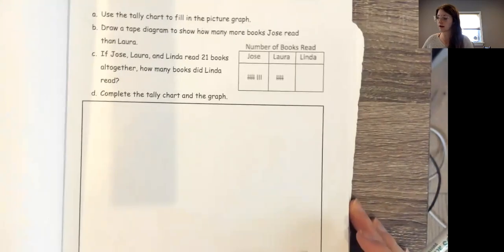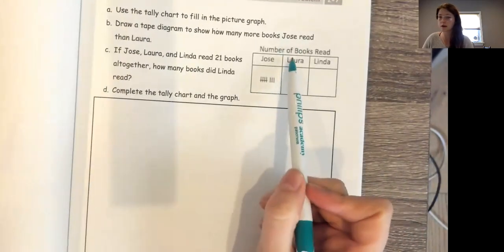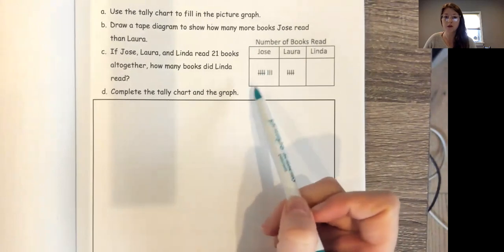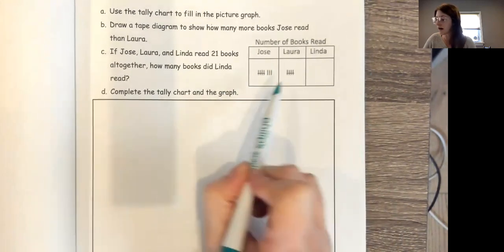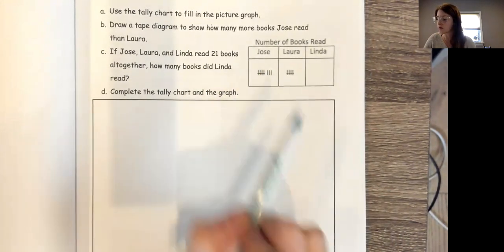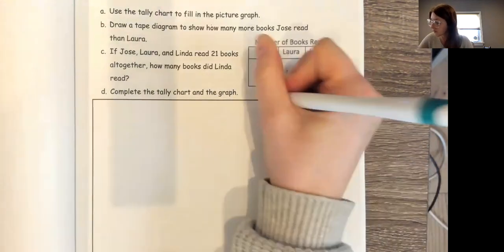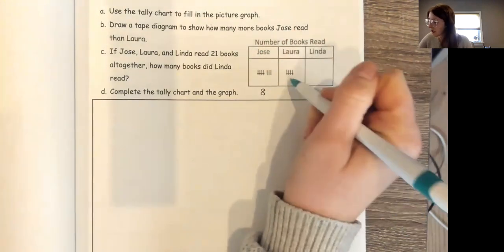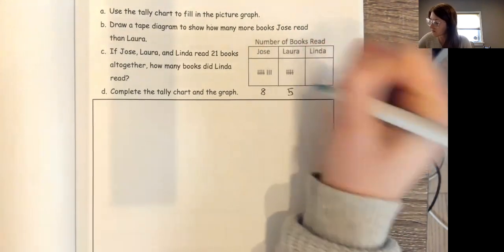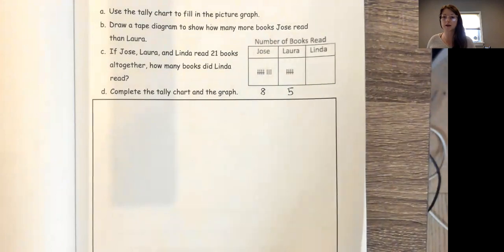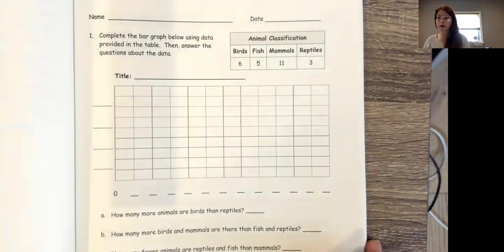So the first thing I need to do is figure out how many number of books each person read. So I'm gonna use the tallies to figure it out. When I see this group that has a line across it, that means this is five so I can count on in my head: five, six, seven, eight. So I know Jose read eight books and I know Laura read five books. I'm not sure how many Linda read yet, but I know that I'm gonna be able to fill that in later.